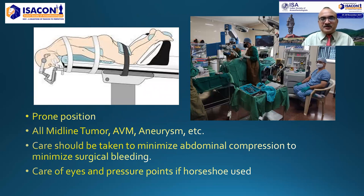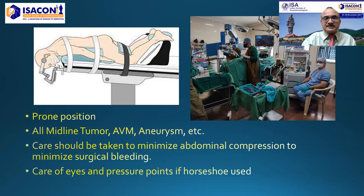In the prone position, the patient is completely made prone and lies on bolsters. The head is either fixed with a pin system or a horseshoe can be utilized. This position is used for all midline tumors, AVMs, aneurysms, etc. When the horseshoe is used, care should be taken for the eyes, pressure points, and abdominal pressure. Bolsters are used to minimize abdominal pressure and surgical bleeding. The photograph shows actual surgery in progress with the anesthesia workstation and surgeon working on the microscope.